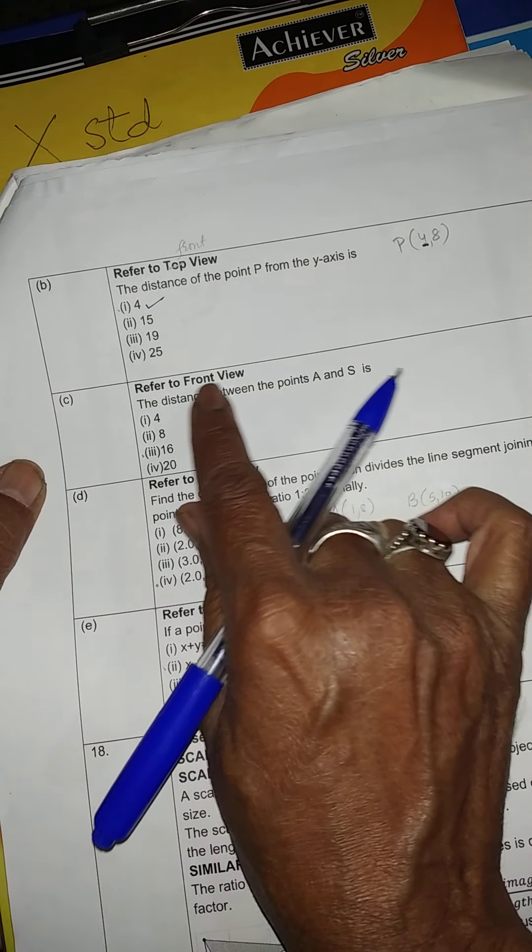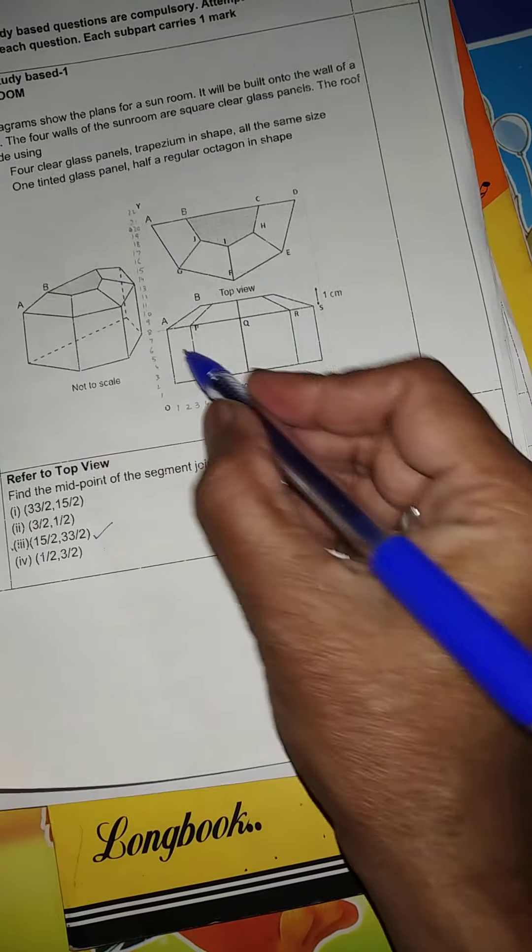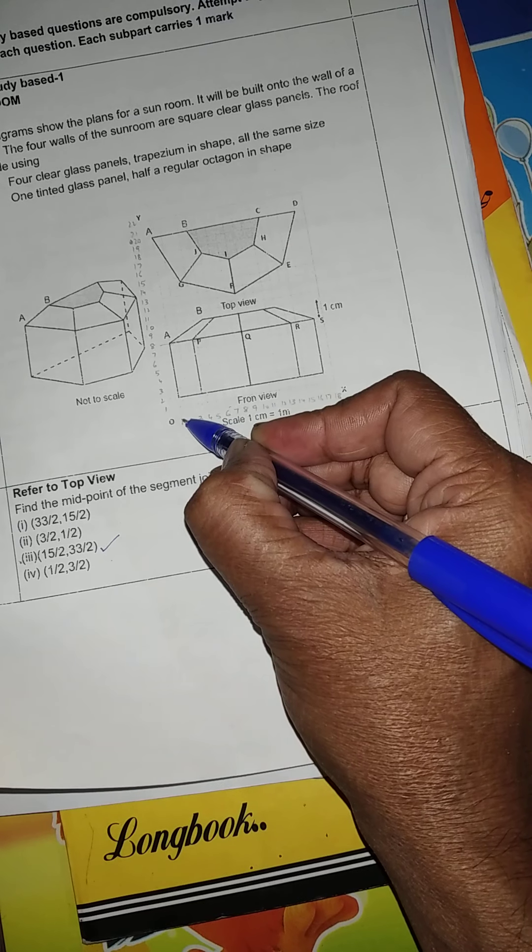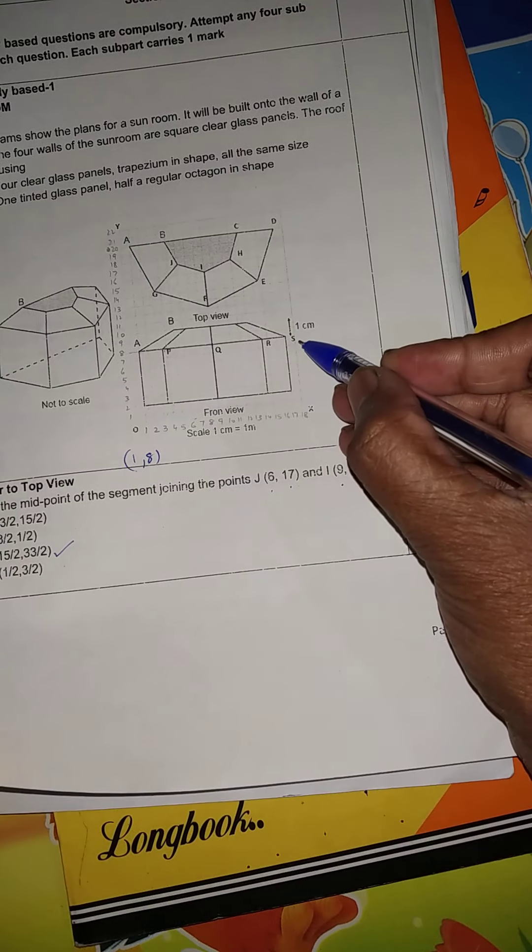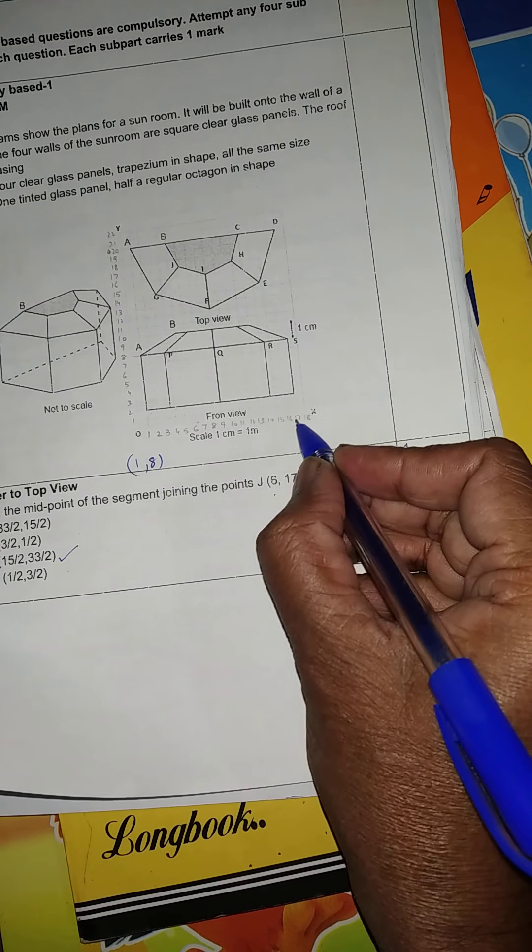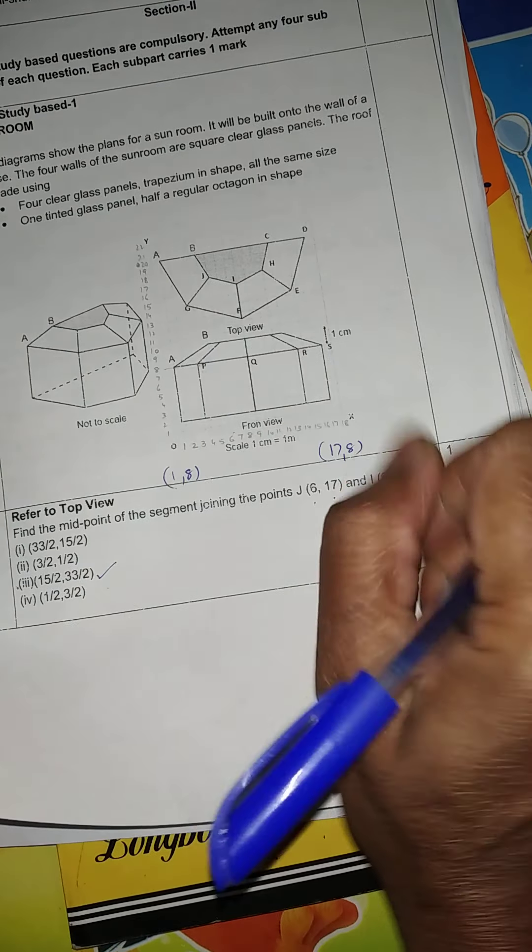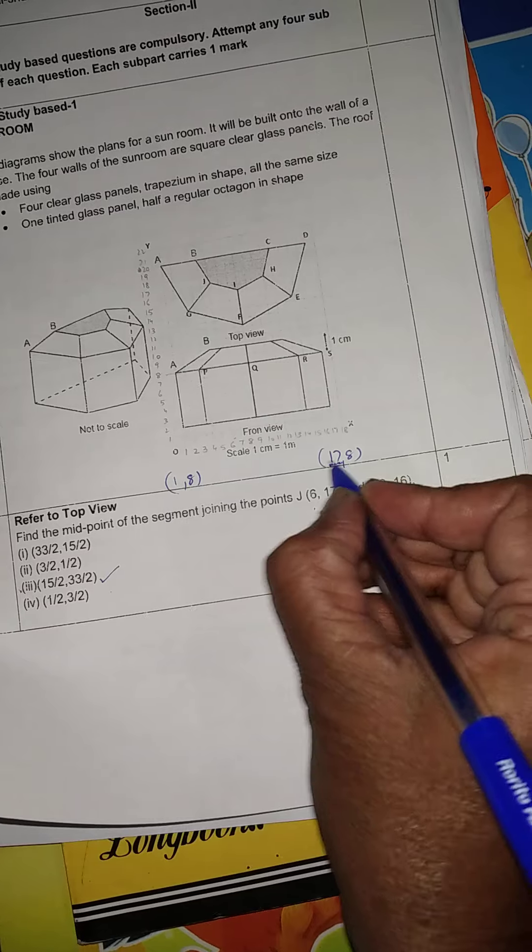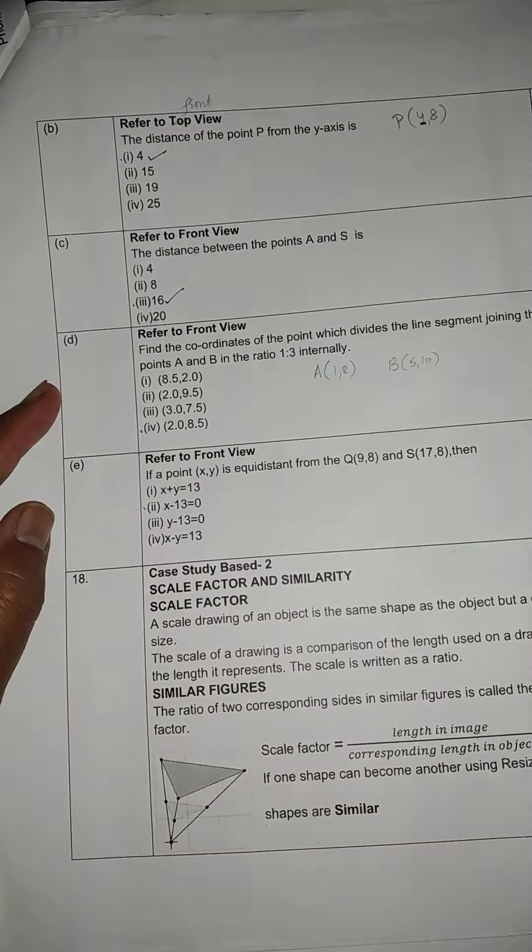Now, third part is refer to this view. The distance between the points A and S is how much? See A and S. A is here and its coordinates will be 1 and 8 and S coordinates will be 17 and 8. He is asking to find the distance between these two. You see the coordinate of x here and here. So 17 minus 1 will be equal to 16. That is why here answer will be 16. That is the correct answer.